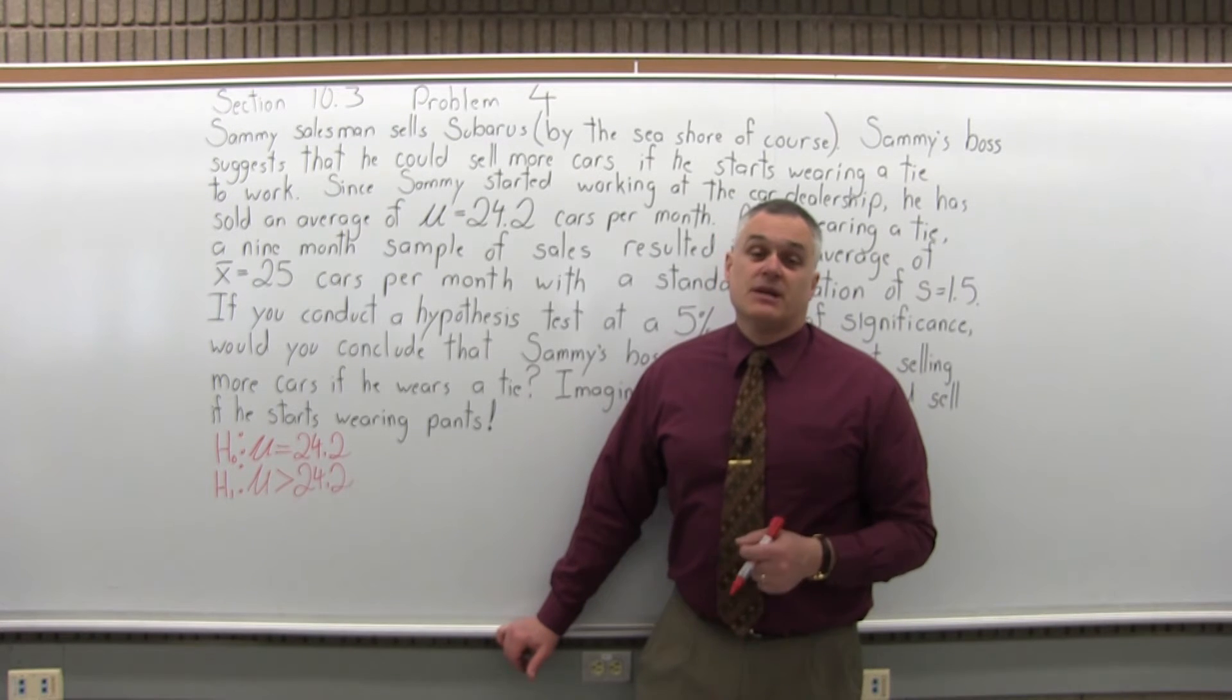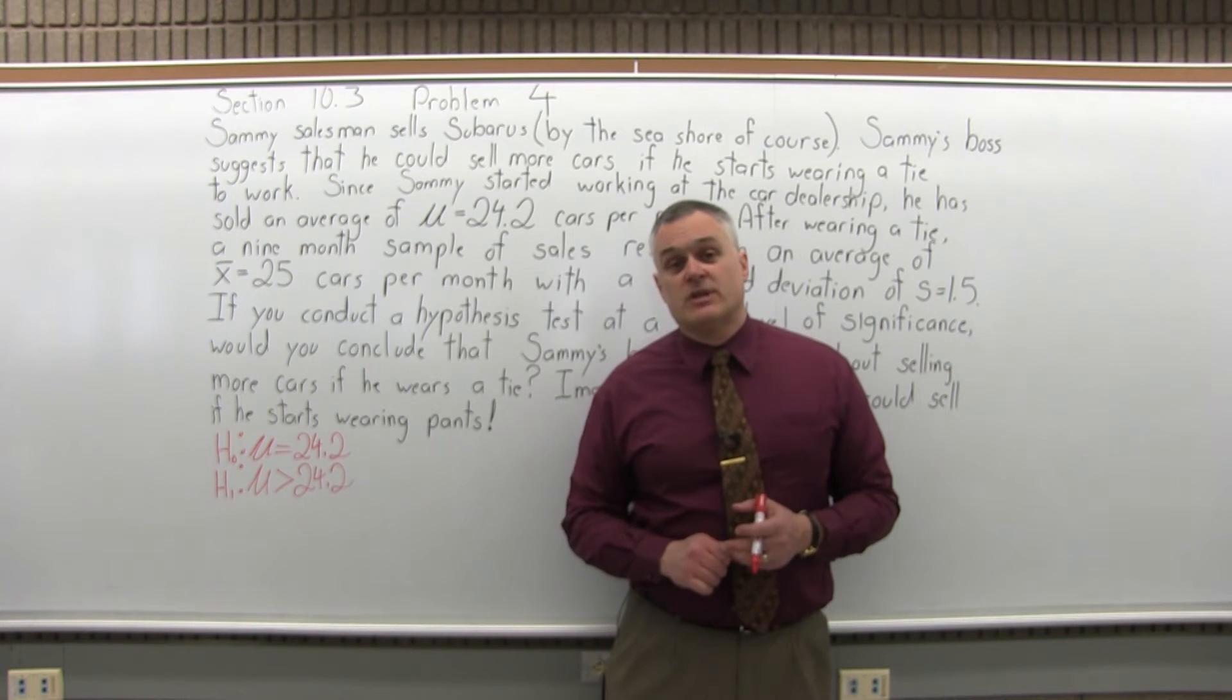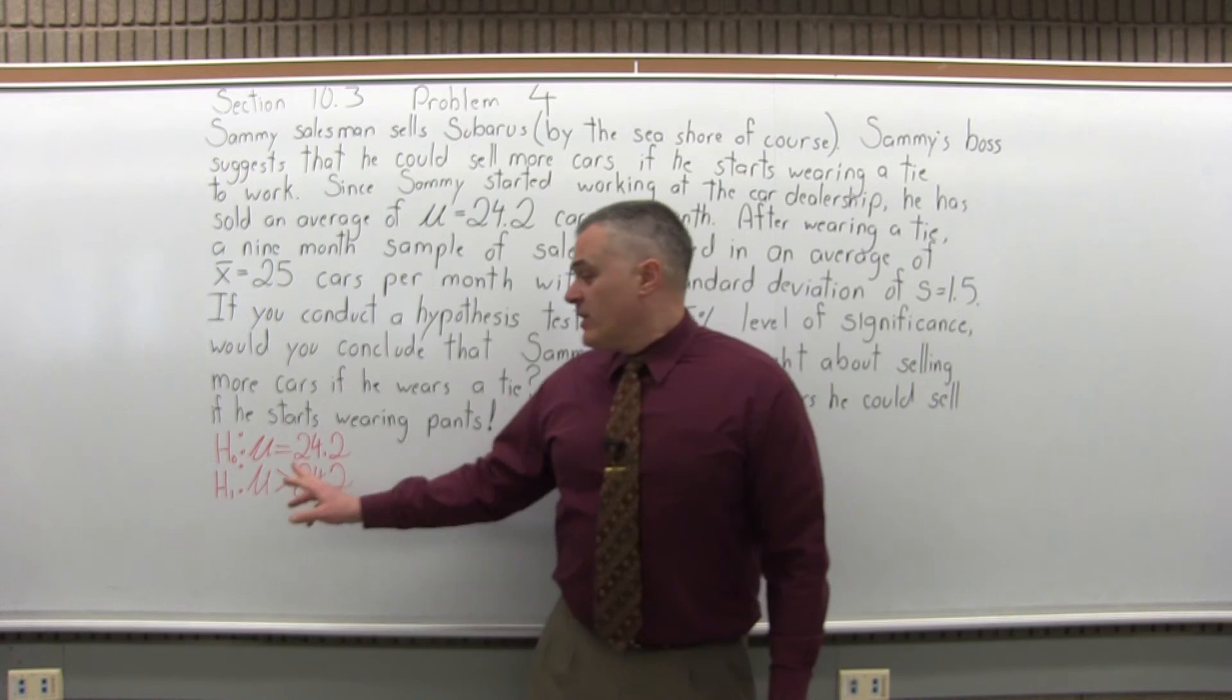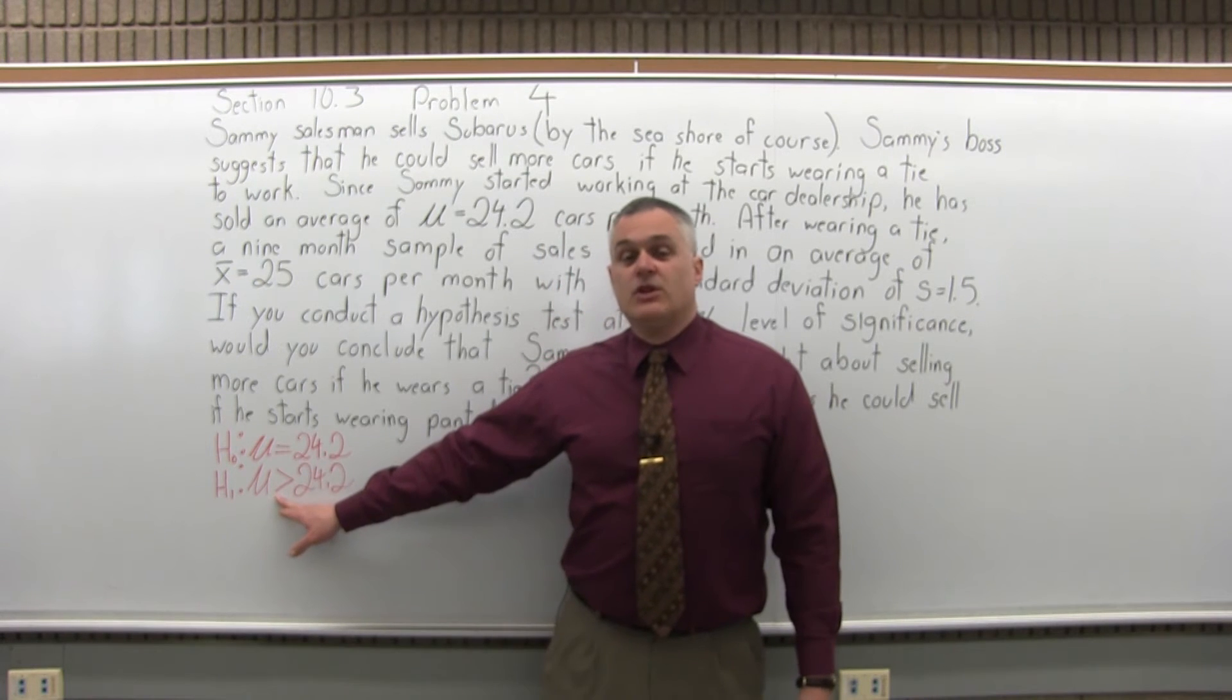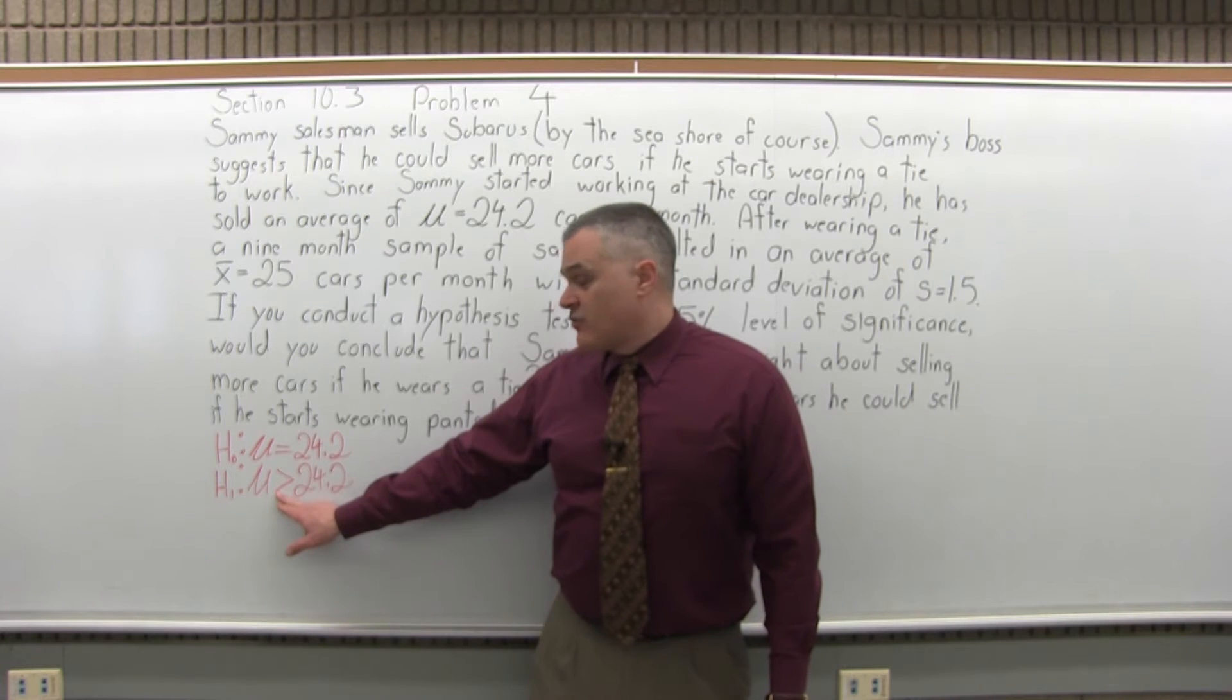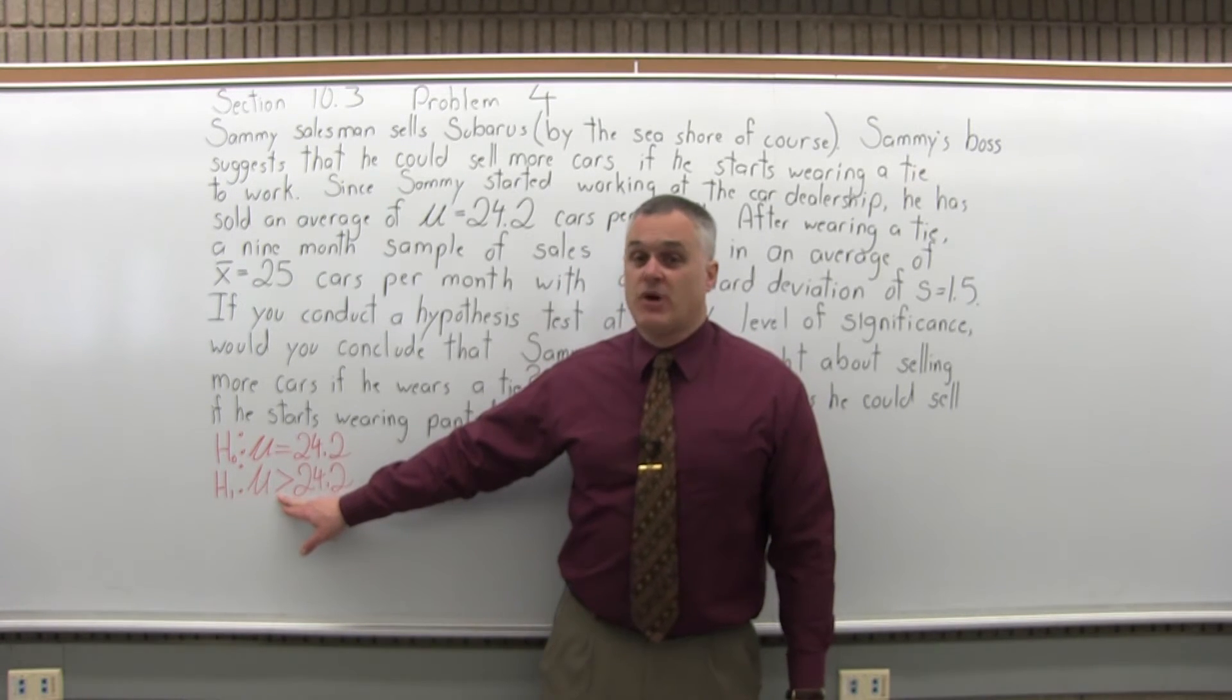So the next step, step three, is determine what type of test this is. It could be a left tail test, right tail test, or a two tail test. The way to determine that is to look for the symbol in the alternate hypothesis. And in this case, my greater than symbol points to the right. So this is a right tail test.